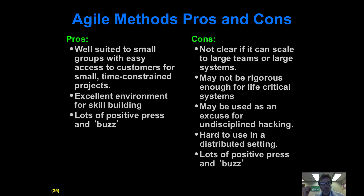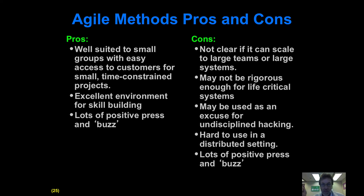With a lot of testing and a lot of interaction with the customer, you rapidly and in an agile manner build a system that satisfies their requirements. The pros of agile methods: it's really well suited to small development groups with easy access to their customers, when the project is under time constraints and the resulting system is relatively small and not life-critical. The cons: if it's a life-critical application, you maybe don't want to just see if the customer is dead or not to figure out whether you need to make a change.